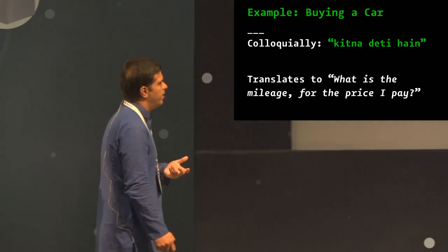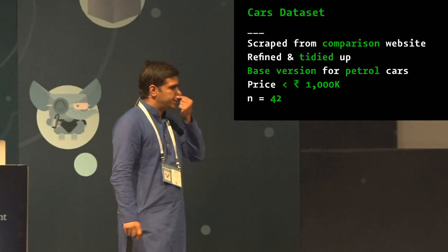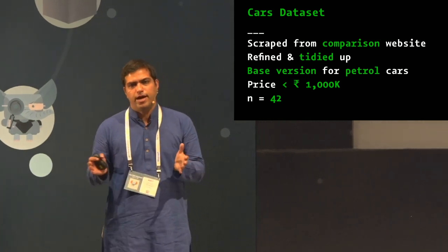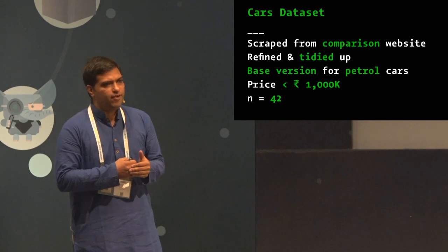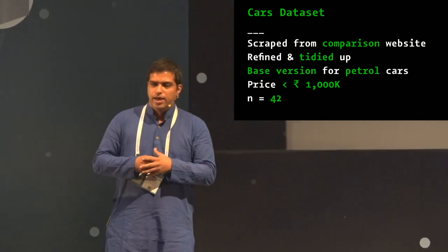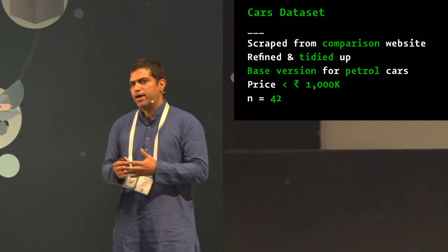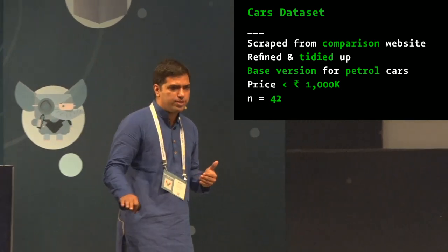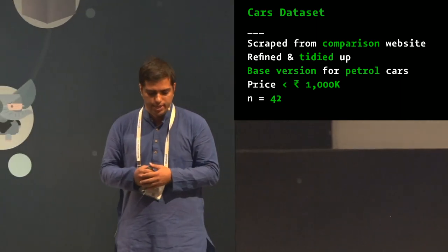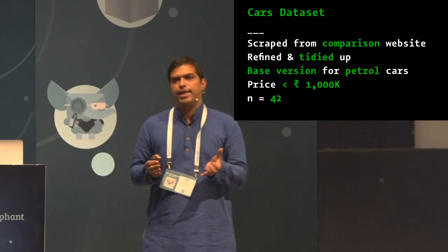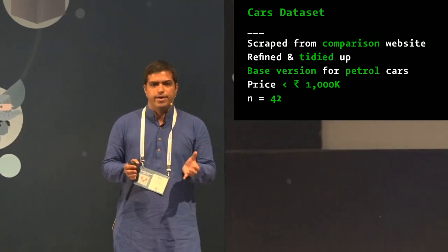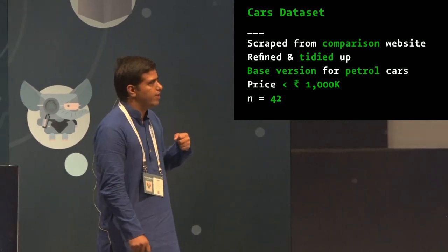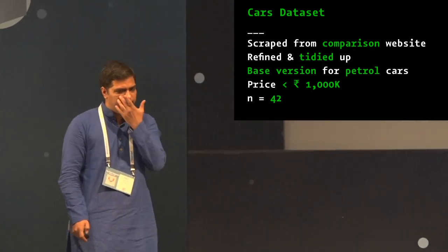There were about 800 cars. To build this simple dataset, I took the base version of each car, ignoring any trims, looking only at starting price, petrol cars only, and cars under about 100K. This comes to about 42 entries — a good dataset I can keep in my head when I go out to buy a car. The data has brands, models, price, and mileage. For example: Tata Nano at about two lakhs (200,000) with 23.9 km/liter, and at the other end a Volkswagen Vento at about 785,000 with 16.1 km/liter.